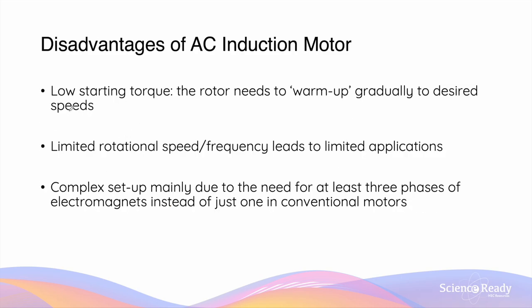The disadvantages of an AC induction motor include a low starting torque. The torque depends on the rate of flux change, which is always relatively small during the startup phase. Although rotational speed can be easily changed by adjusting the frequency of the AC power supply, this is limited as the AC frequency has its own limits, resulting in limited applications for AC induction motors. Furthermore, AC induction motors require a complex setup, needing at least three phases of electromagnets, as opposed to only one pair of permanent magnets in conventional DC motors.